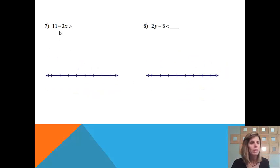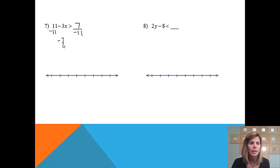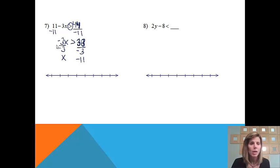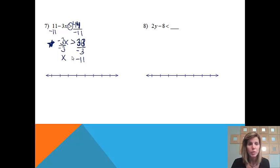Let's try: 11 minus 3x is less than 44. We treat it like an equal sign and subtract 11 from both sides, giving negative 3x. On the other side we have 33, and we bring down the less than sign. Now we divide both sides by negative 3, getting x. 33 divided by negative 3 is negative 11. Special case: since we divided by a negative number, we switch the inequality direction, making it a greater than sign. So x is greater than negative 11.